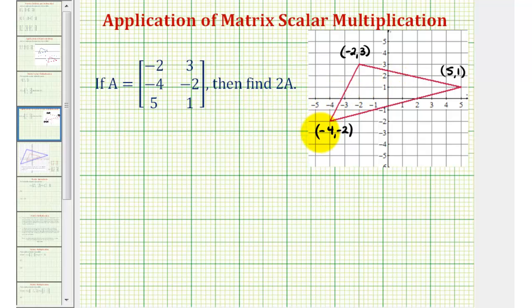Notice how if we consider the three vertices of this red triangle, we can organize them into matrix A, where each row represents one of the vertices of the triangle. This row represents this vertex, this row represents this vertex, and this row represents this vertex.